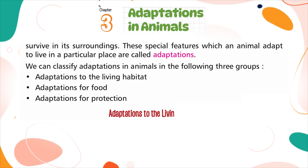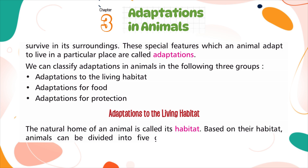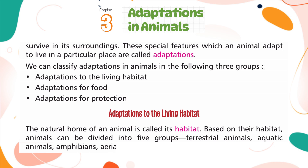Adaptations to the living habitat. The natural home of an animal is called its habitat. Based on their habitat, animals can be divided into five groups: terrestrial animals, aquatic animals, amphibians, aerial animals, and arboreal animals.